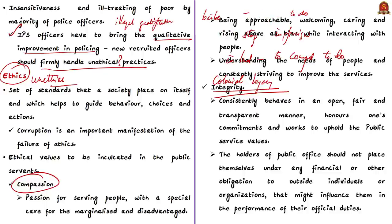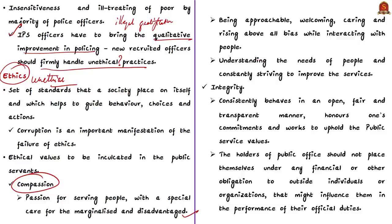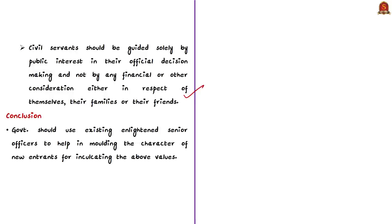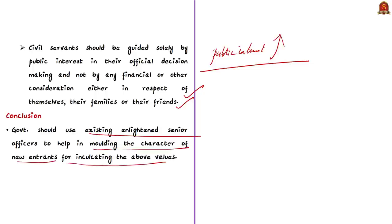By compassion, the author means passion for serving people with special care for marginalized and disadvantaged sections. It also means being approachable, welcoming, caring, and rising above all bias when interacting with people. Integrity means that the public servant should consistently behave in an open, fair, and transparent manner to uphold public service values. Civil servants should be guided only by public interest in their official decision-making, and not by any financial or other consideration for themselves, their families, or their friends. The author concludes that the government should use existing enlightened senior officers to help mould the character of new recruits to inculcate these values.